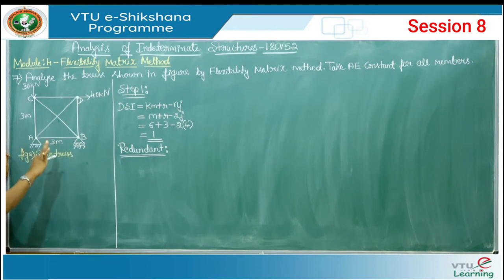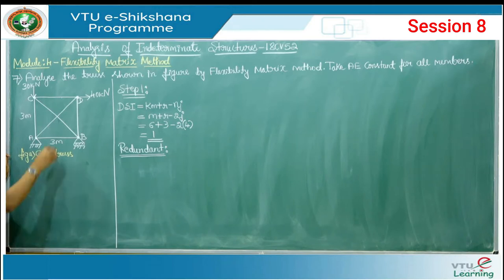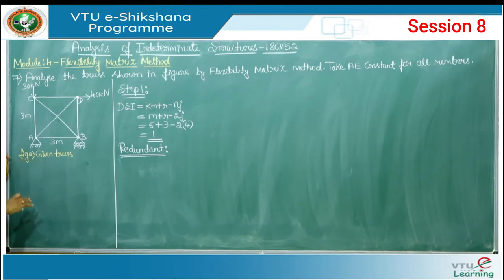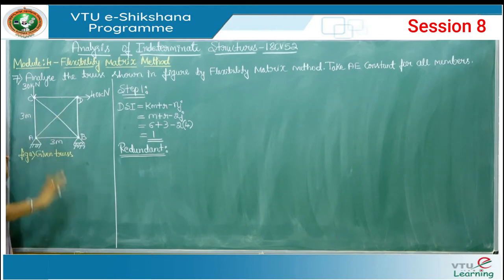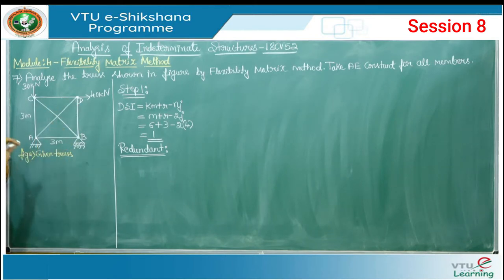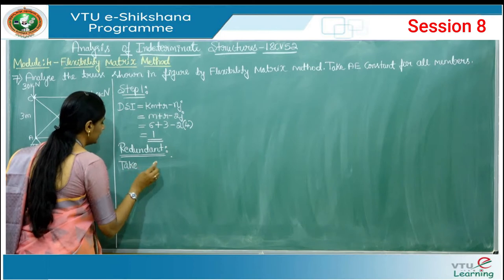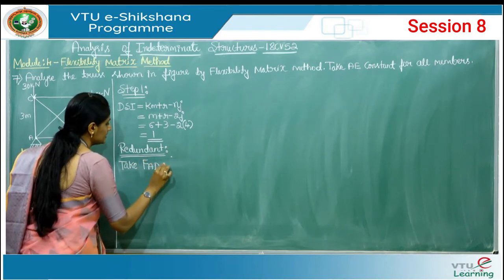You can assume any member or reaction as the redundant. To simplify the solution, if you have a choice, preferably assume diagonal elements as redundants. If the question specifies a particular force as redundant, you must use that. Here we can assume either AD or BC. So I am going to take the member force in AD as redundant, that is F_AD as the redundant.